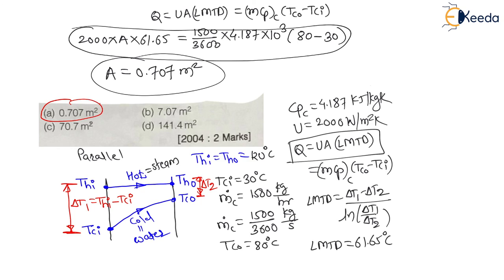For this question the answer is 0.707 m², so option A is the correct choice. In the next lecture, we will see one more numerical on this topic which was asked in a previous year GATE examination.